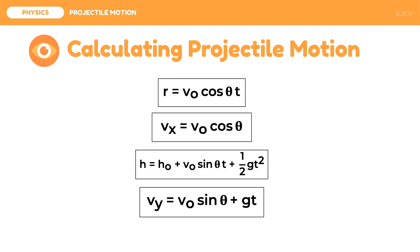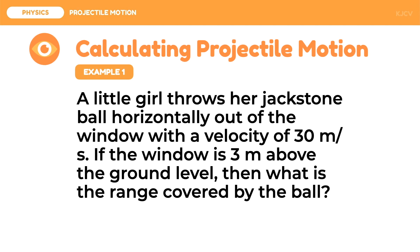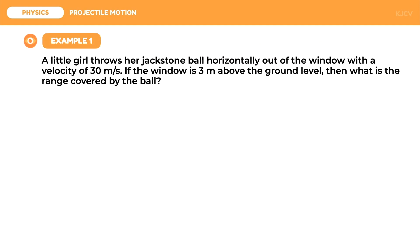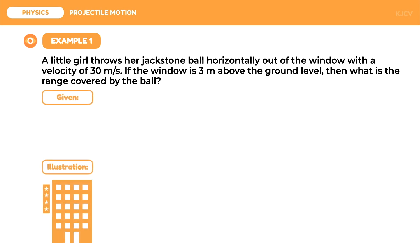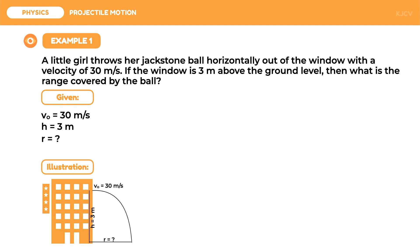Let us now look at the first example. A little girl throws her jackstone ball horizontally out of the window with a velocity of 30 meters per second. If the window is 3 meters above the ground level, then what is the range covered by the ball? To start solving this problem, let us identify the given quantities. First, we have the initial velocity of 30 meters per second. Second, we have the height of 3 meters. We are asked to solve for displacement along x or range.